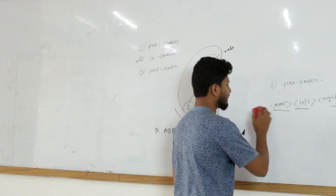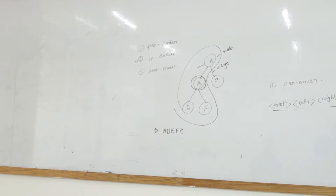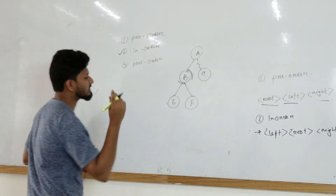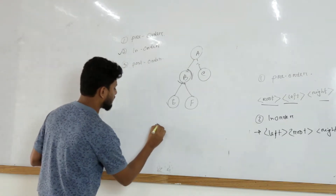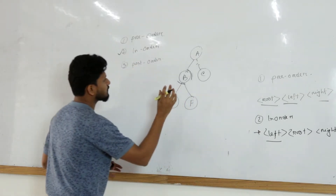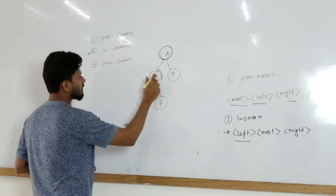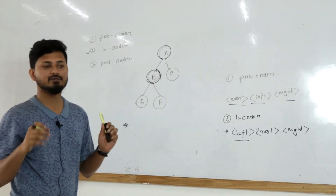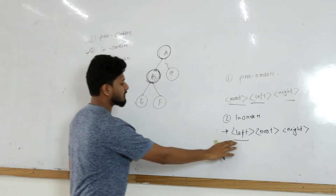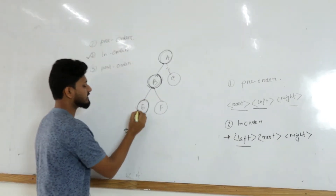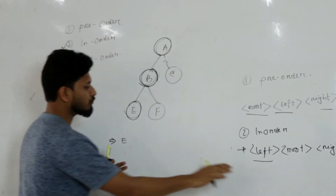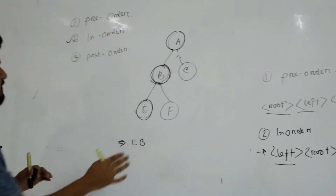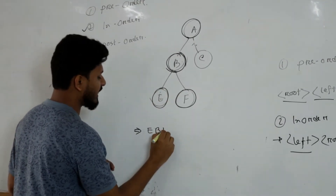Now let me write the formula for in-order. For in-order the algorithm is: left first, then root, then right. Let's apply in-order to this tree. First we go to the left. When we come to B we can see it is also a binary tree, so we go left again. The leftmost node is E, so we write E. Then root B, then right child F.